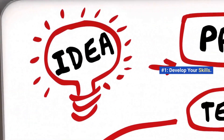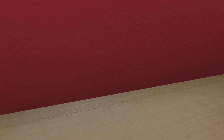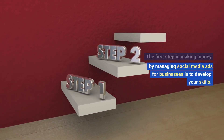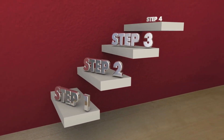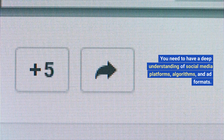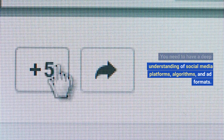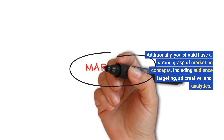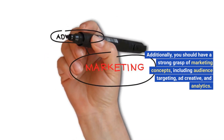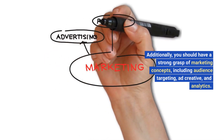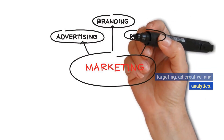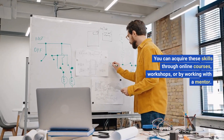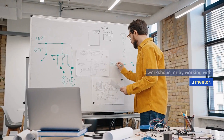Number one: develop your skills. The first step in making money by managing social media ads for businesses is to develop your skills. You need to have a deep understanding of social media platforms, algorithms, and ad formats. Additionally, you should have a strong grasp of marketing concepts, including audience targeting, ad creative, and analytics. You can acquire these skills through online courses, workshops, or by working with a mentor.